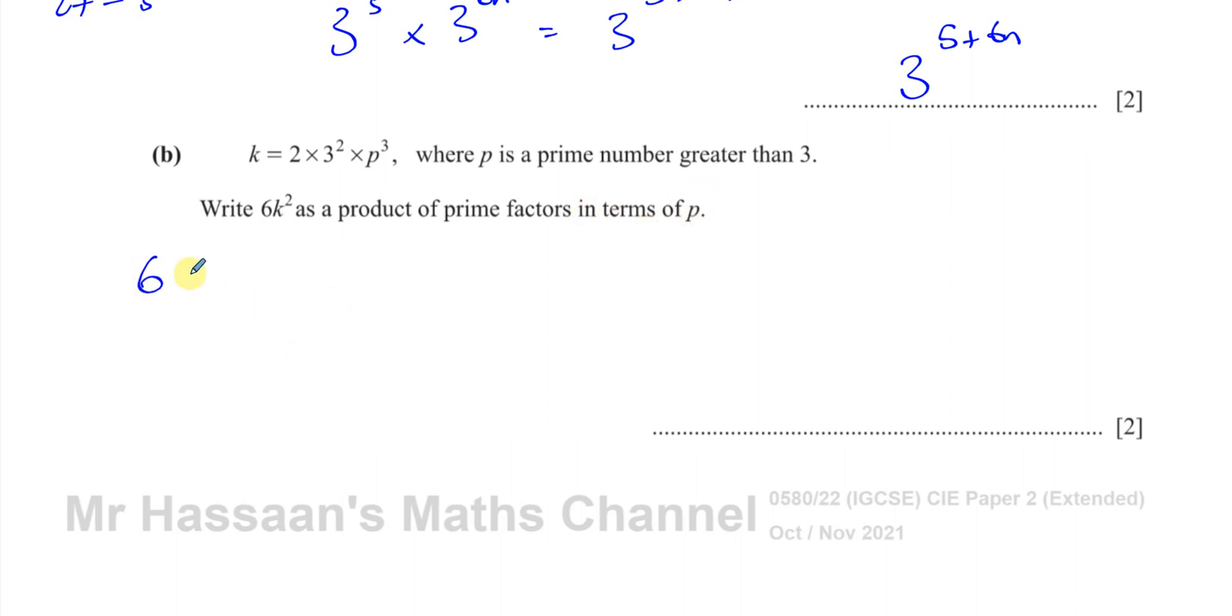Okay, so 6 times k squared. So k is 2 times 3 squared times p cubed, and you've got to square that part.